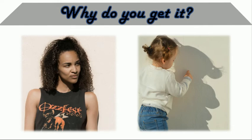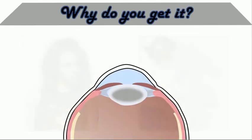Why do you get it? Compare these two pictures. The person on the left is standing right against the wall and you see no shadow. On the right, there is a little gap — a clear or non-opaque medium between the child and the wall on which the shadow is formed. A similar thing happens in an immature cataract.